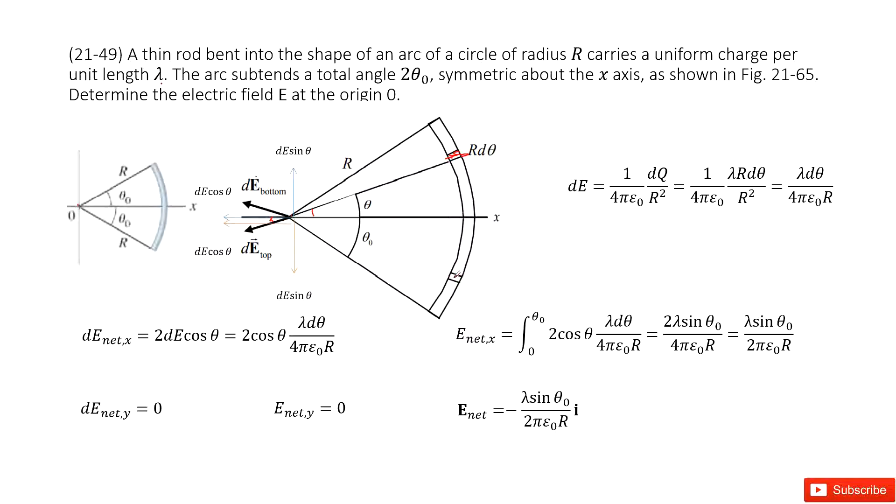Now we look at the symmetry, mirror symmetry. The bottom part, the small fraction at the bottom, dE bottom, looks like this vector. Still can project it in x component and y component. You can see for the y component, this term and this term, they are equal in magnitude but opposite in directions, therefore can be canceled. So we only need to look at the x component. It is 2 times dE cosine theta.